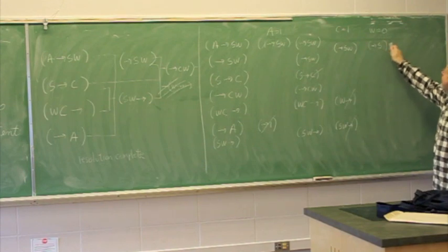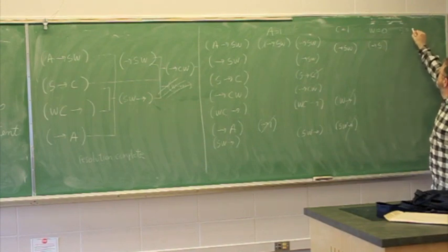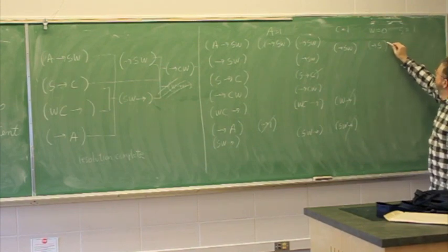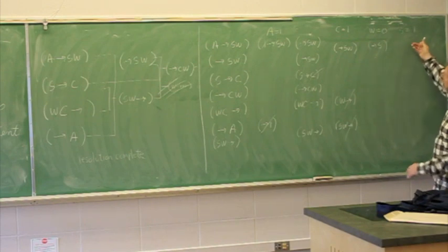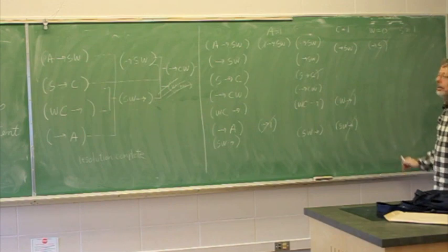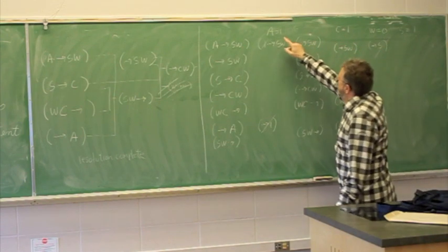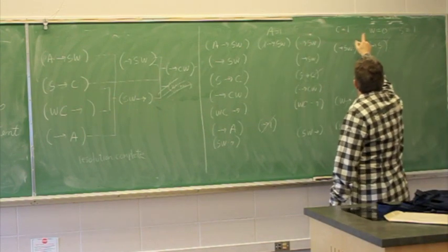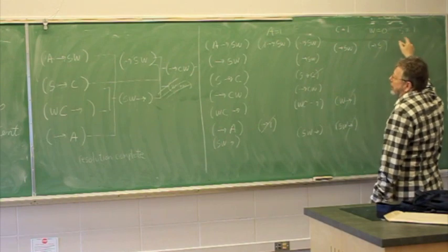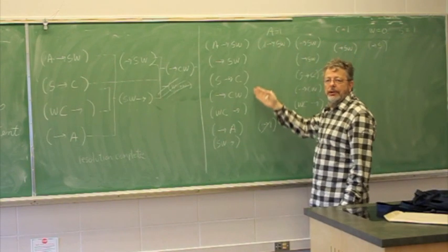And it says that S is true. So we guess S is true and get rid of this one. Now we have no clauses left to satisfy. So what's happened - if we take A and C to be 1 and W to be 0 and S to be 1, then we've satisfied all these clauses.